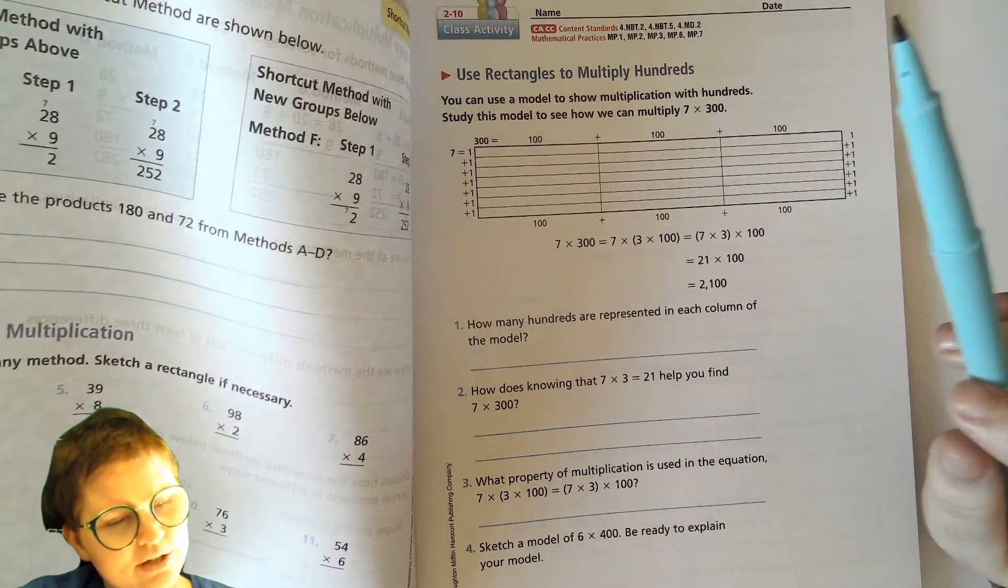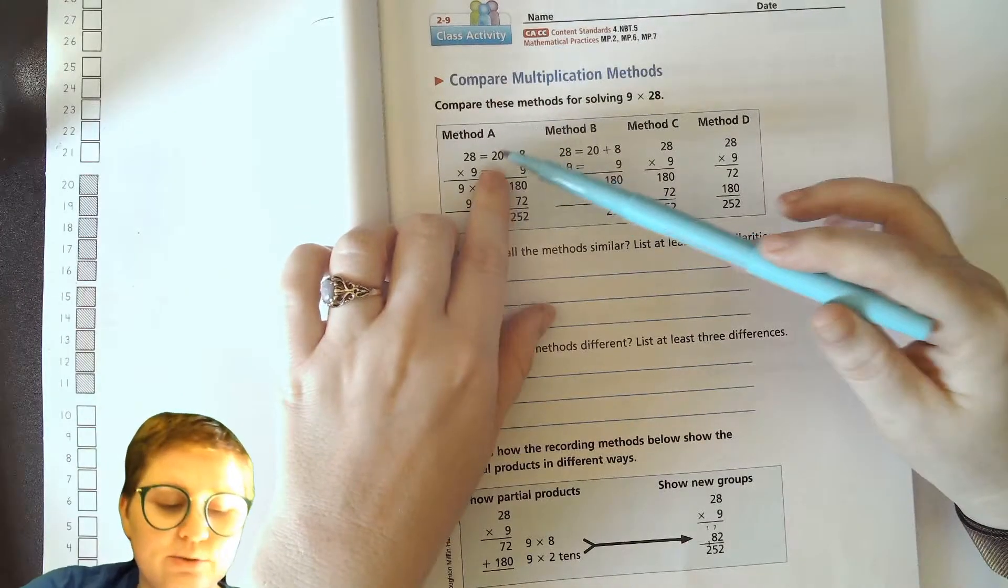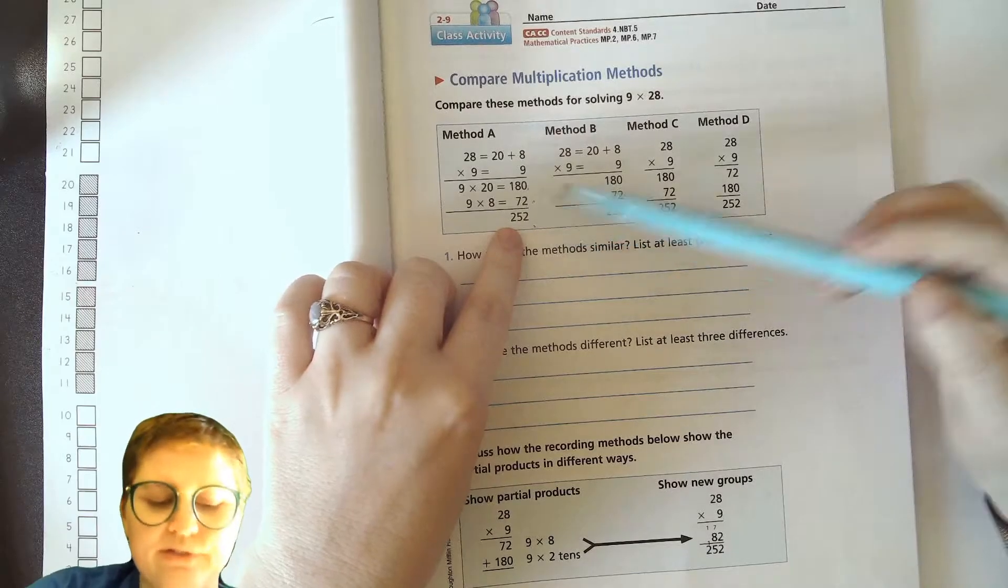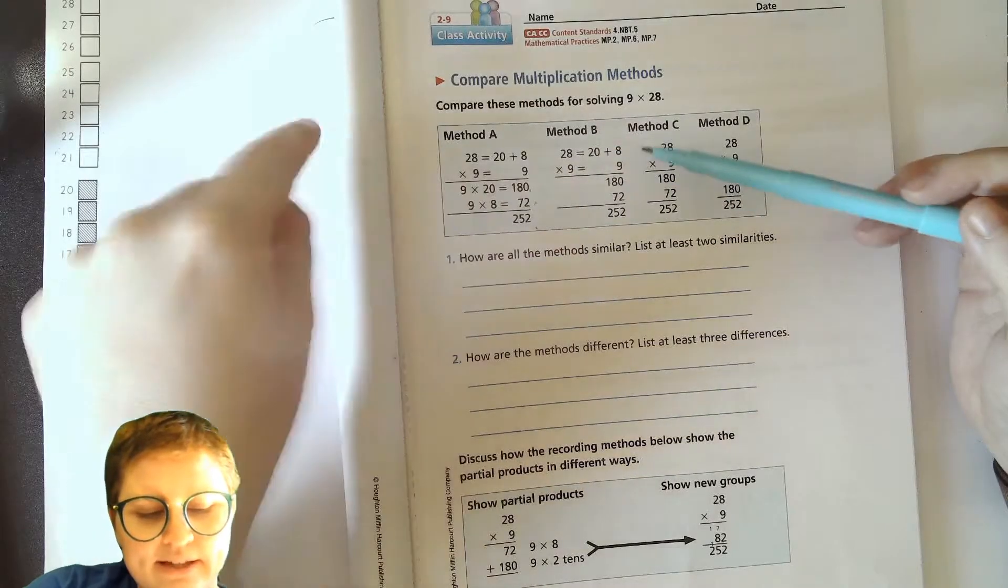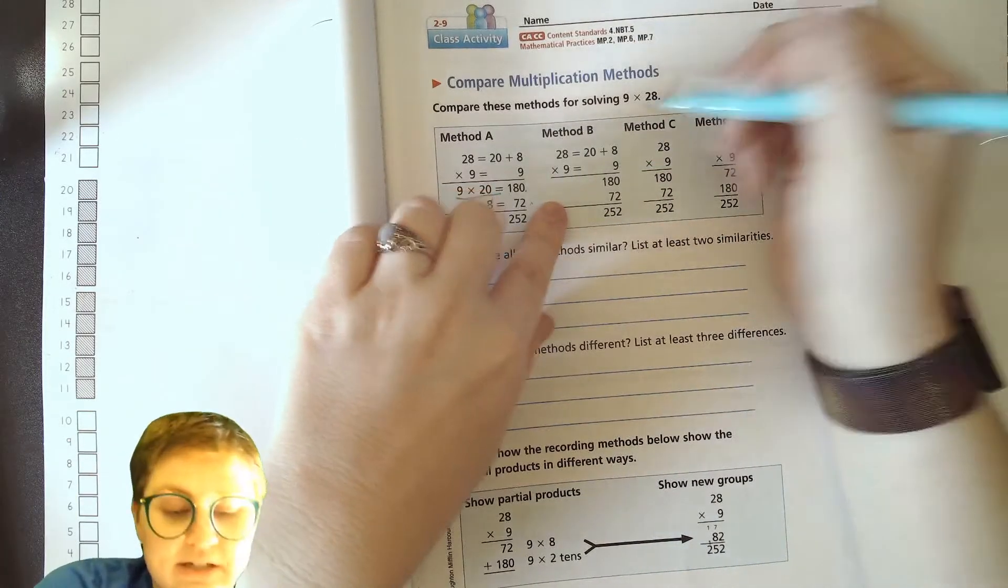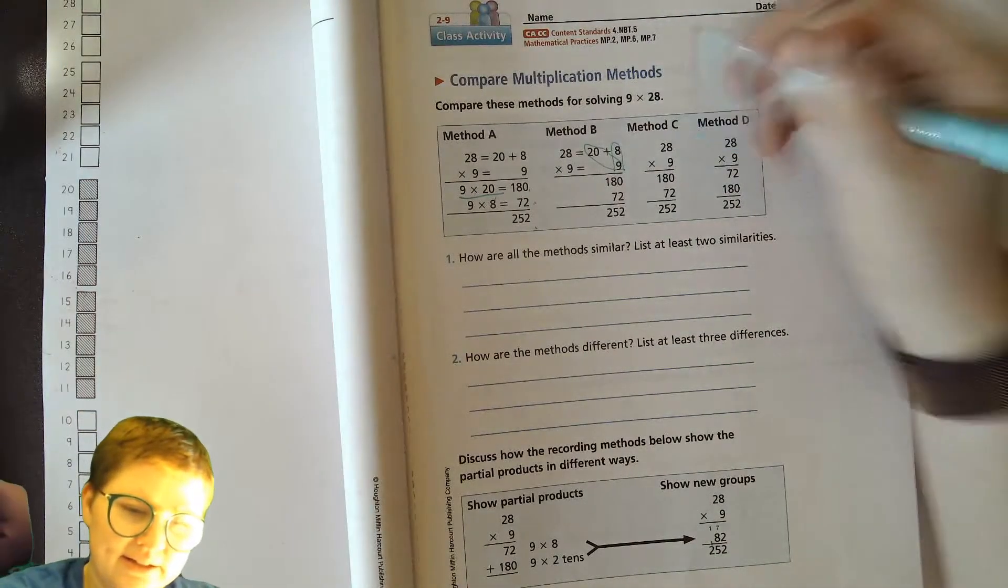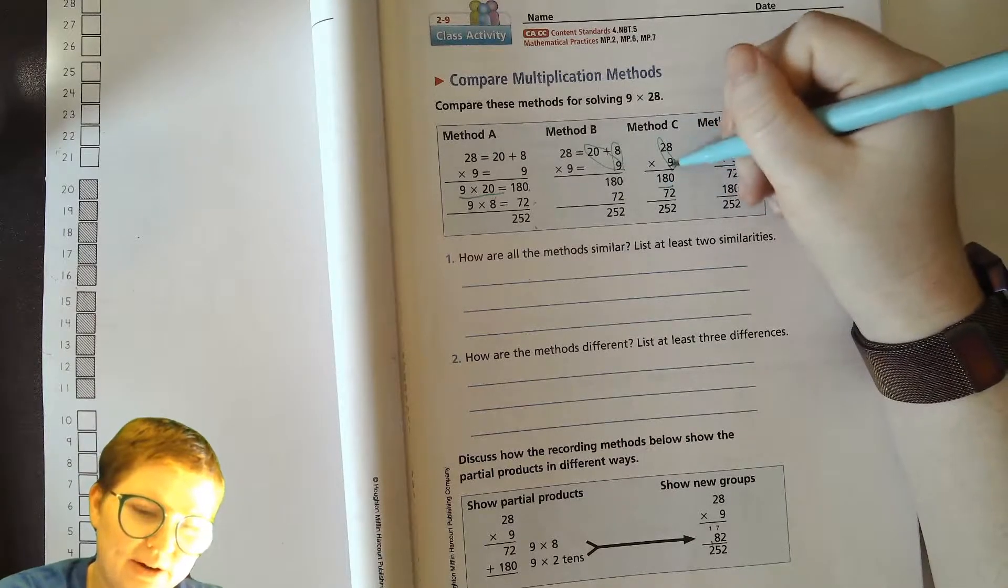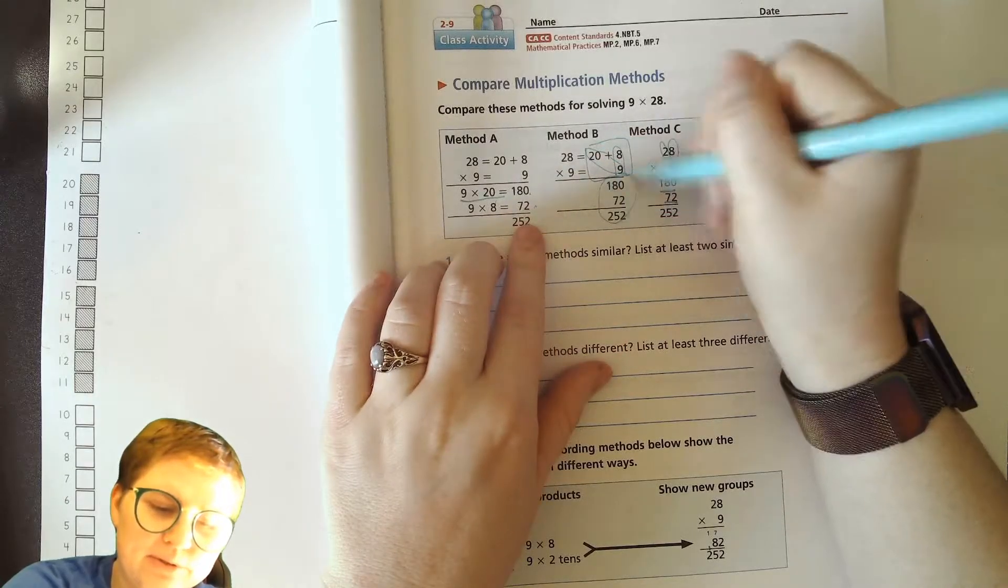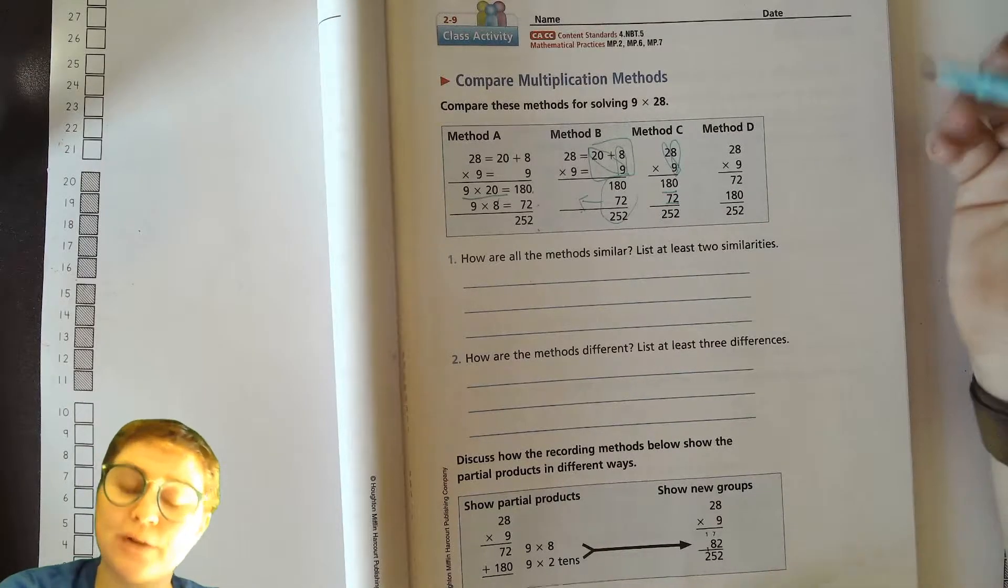Here we go. Method A: In all of these we're doing 9 times 28. In Method A, we've expanded the 28 to 20 plus 8 here, and then we do the 9 times 20 is 180, 9 times 8 is 72, add them up and get 252, right? In Method B, same thing—we have our expanded form, and then here rather than writing out this step, that portion seems to have just been done in our heads—9 times 20, 9 times 8 written there and then added. Method C: we have our 9 times 20 right there, 180, our 9 times 8 right there, 72. It's a lot narrower, isn't it? Because we didn't write out this whole side chunk. This part was just brought over that way.